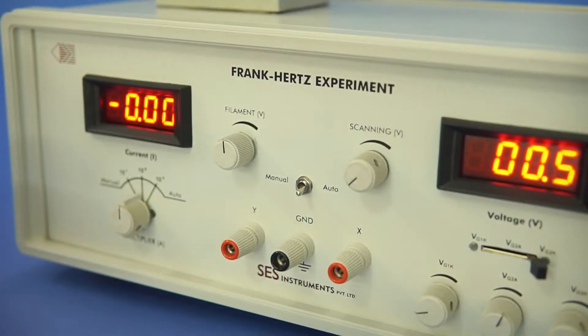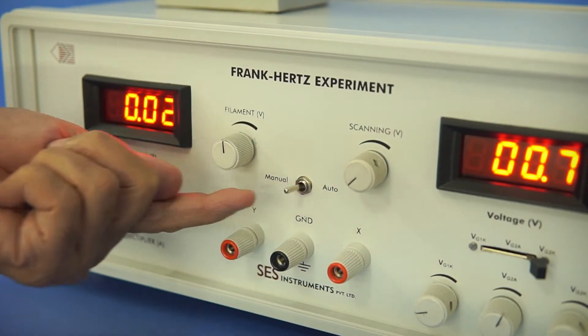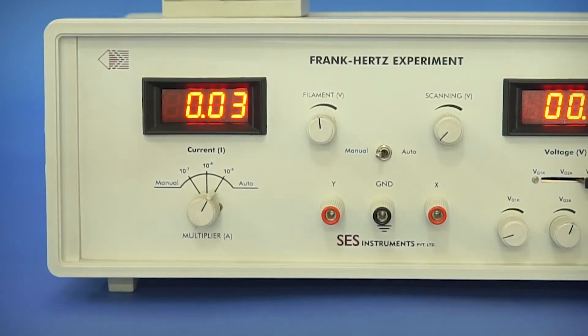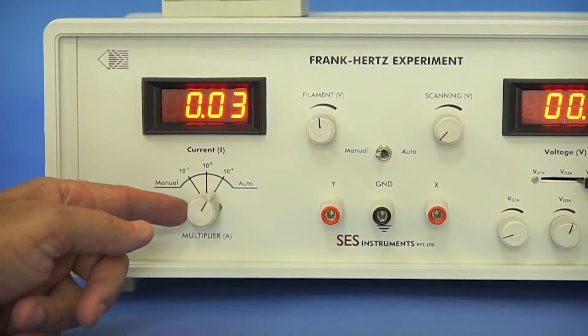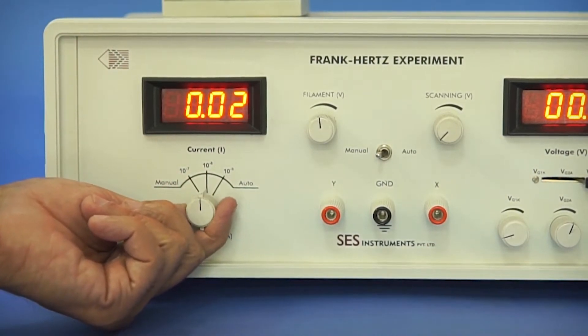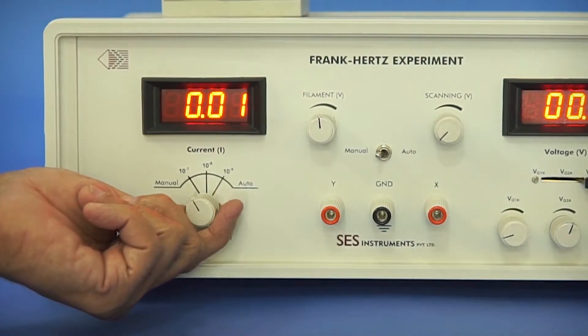Put the manual/auto slider switch in manual mode. Now set the current multiplier switch at 10 to the power minus 8 or 10 to the power minus 7 ampere as required.